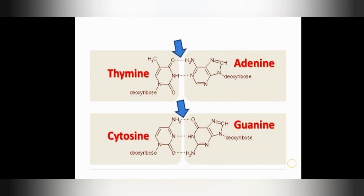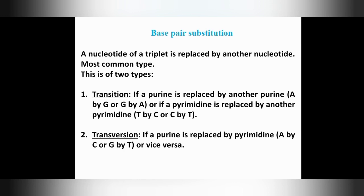Base pair substitution is a type of mutation when a nucleotide of a triplet is replaced by another nucleotide. The triplet is the three bases forming one codon. From a triplet, one nucleotide may be replaced — either deleted or added. This is the most common type of mutation — base pair substitution.